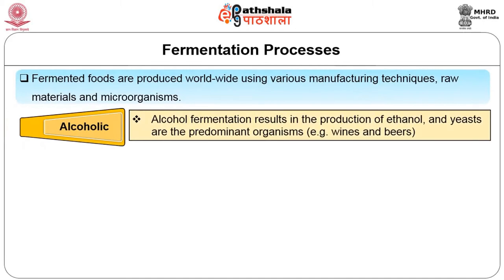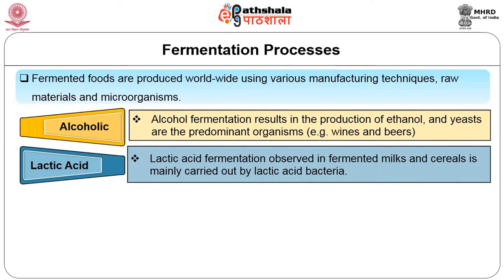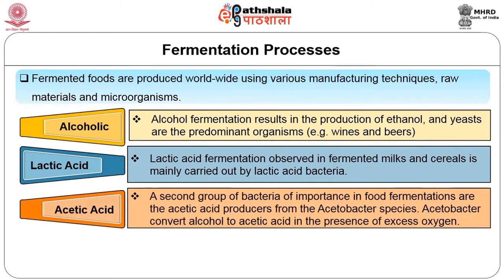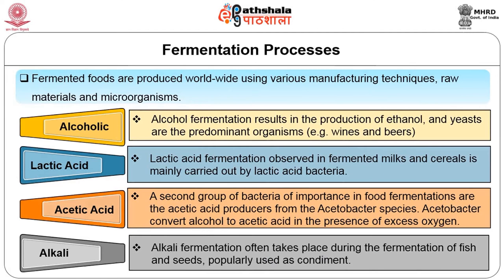Alcohol fermentation results in the production of ethanol and yeast are the predominant organisms. Examples include wines and beers. Lactic acid fermentation observed in fermented meals and cereals is mainly carried out by lactic acid bacteria. A second group of bacteria of importance in food fermentation are the acetic acid producers from the Acetobacter species. Acetobacter convert alcohol to acetic acid in the presence of excess oxygen. Alkali fermentation often takes place during the fermentation of fish and seeds popularly used as condiments.